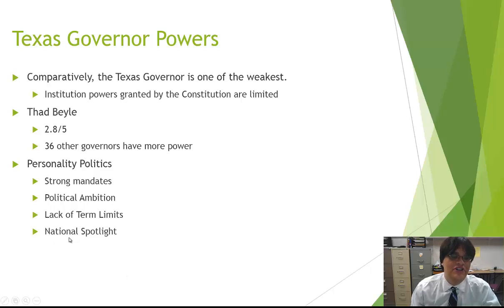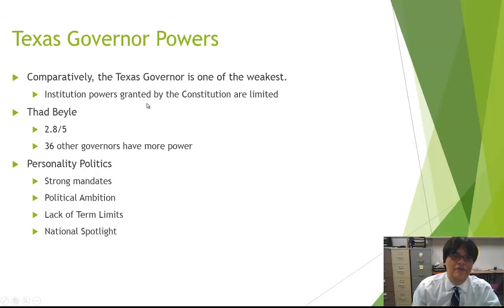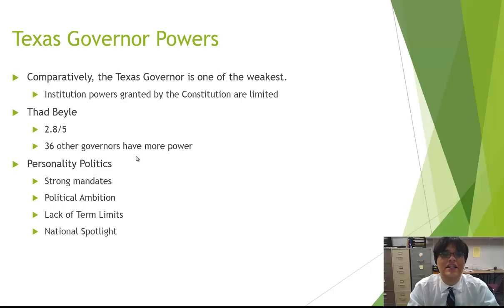So that's how, even though the governor is limited in constitutional power, they have a lot of informal power through their personality, charisma, and connections. That's how the governor really tries to influence and exert power over Texas politics. Keep that in mind for your test: constitutionally and institutionally, the governor is very weak, but personality-wise and through connections, the Texas governor is actually very, very strong.